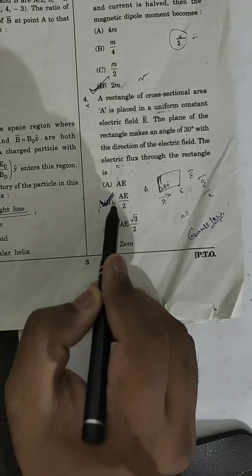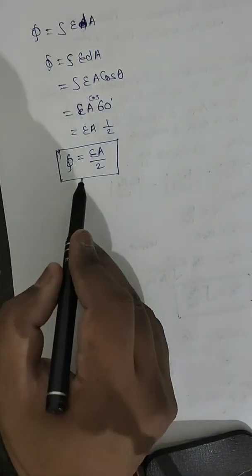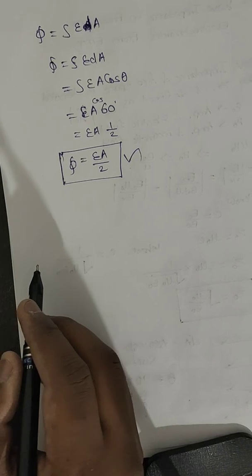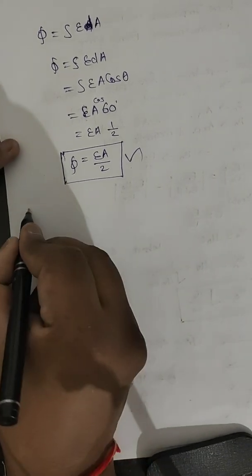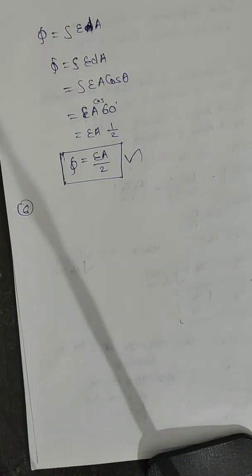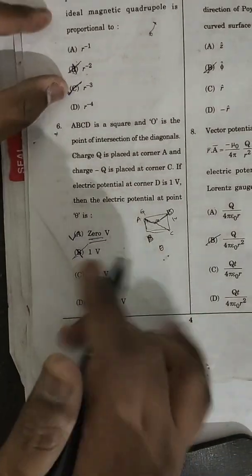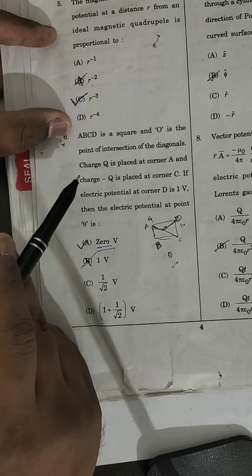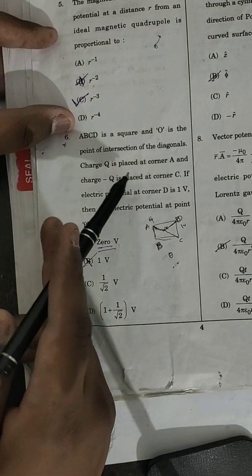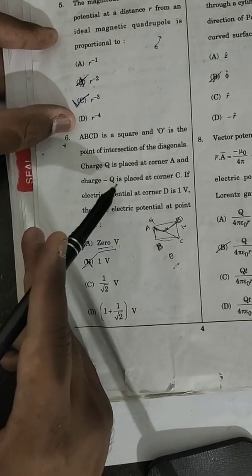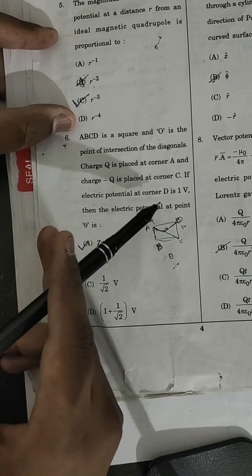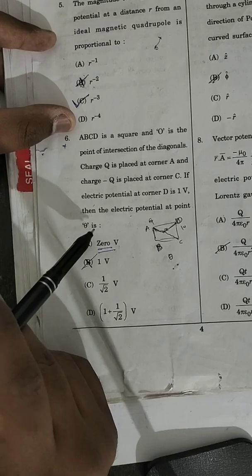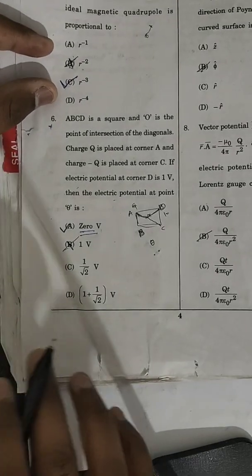We have derived the answer for question 4. Now similarly we are going to discuss question number 6. ABCD is a square and O is the point of intersection of the diagonals. Charge +Q is placed at corner A and charge -Q is placed at corner C. If the electric potential at corner D is 1 volt, then what is the electric potential at point O?